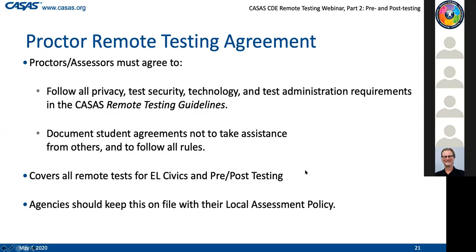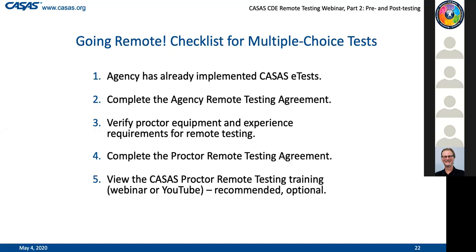Back to the PowerPoint. The proctor remote testing agreement will also be on the CASAS website. It will have each proctor attest to the fact that they've read the guidelines, that they will ensure the student verbally promises to also abide by these agreements - not to cheat, and to follow all test security rules. If you have proctors that do more than one assessment, they just have to do one of these forms and you keep it on file locally with your local assessment policy. Now we're going to get into the going remote checklist for remote testing with e-tests.